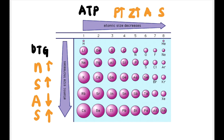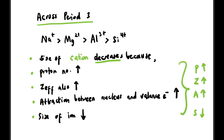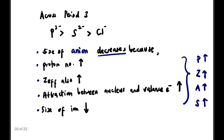Now for ionic size, looking at Period 3: Na, Mg, Al, and Si are cations, while P, S, and Cl are anions. In general, anions are bigger than cations. Across Period 3, the size of cations gets smaller because proton number increases → Zeff increases → attraction between nucleus and valence electrons gets stronger → size of cation gets smaller — use PIZAZZ. For anions, P³⁻ is bigger than S²⁻ which is bigger than Cl⁻; size of anions also decreases because proton number increases, Zeff increases, attraction increases — again PIZAZZ.